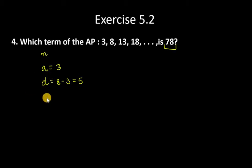So aₙ is 78. Now, the aₙ formula we know is a + (n-1)d.